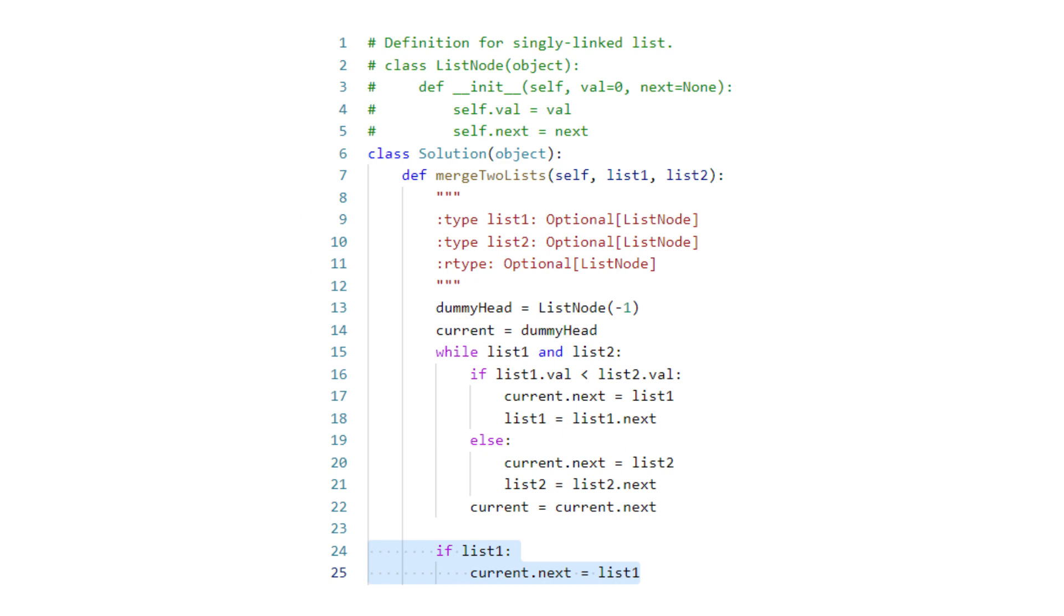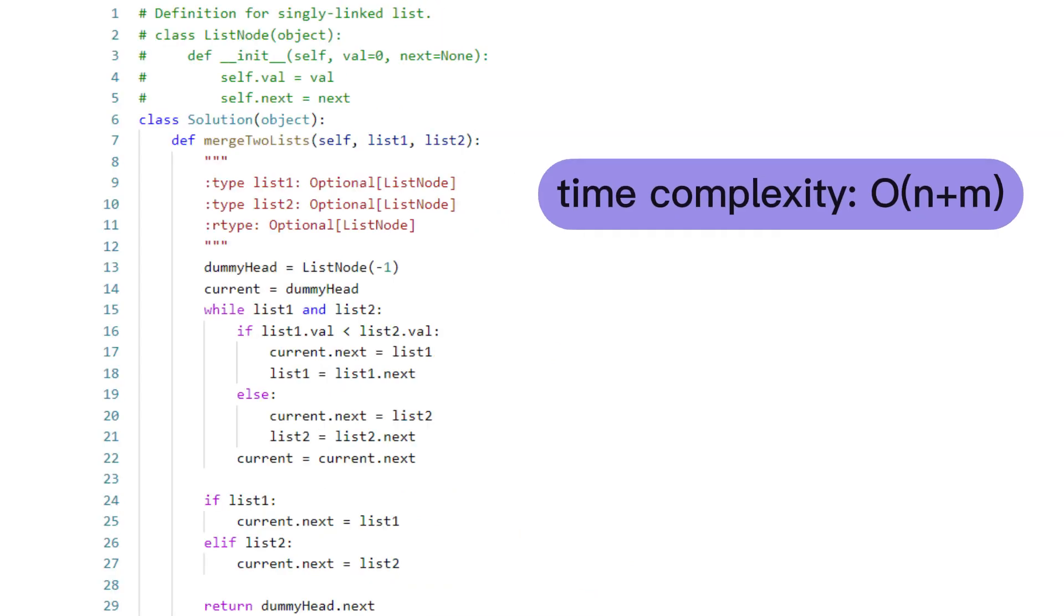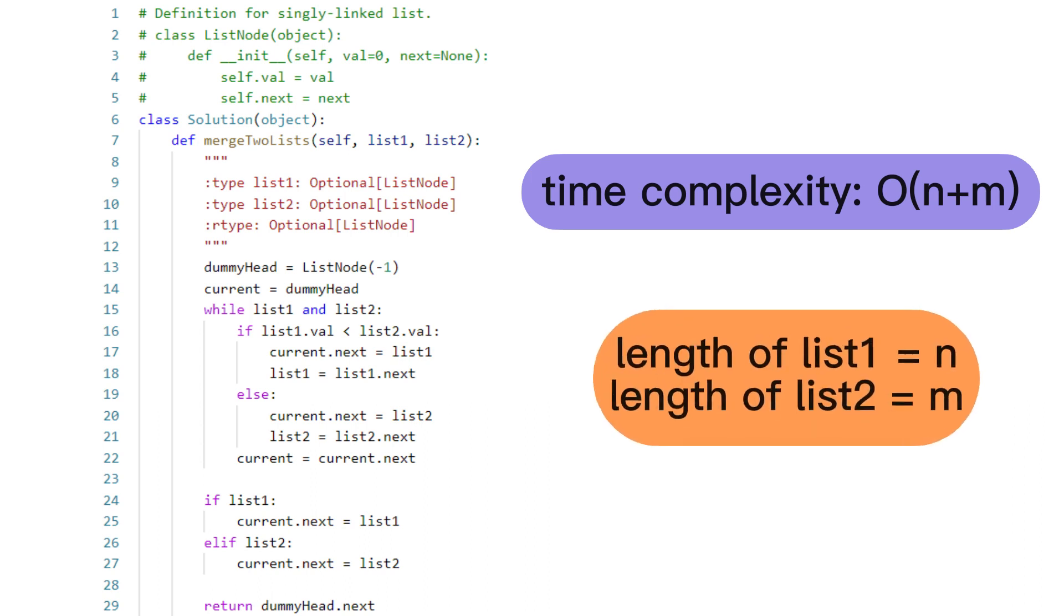Finally, we add any remaining elements from the non-empty list to current and return it. The time complexity of this approach is O(n + m), where n and m are the lengths of the input linked lists.